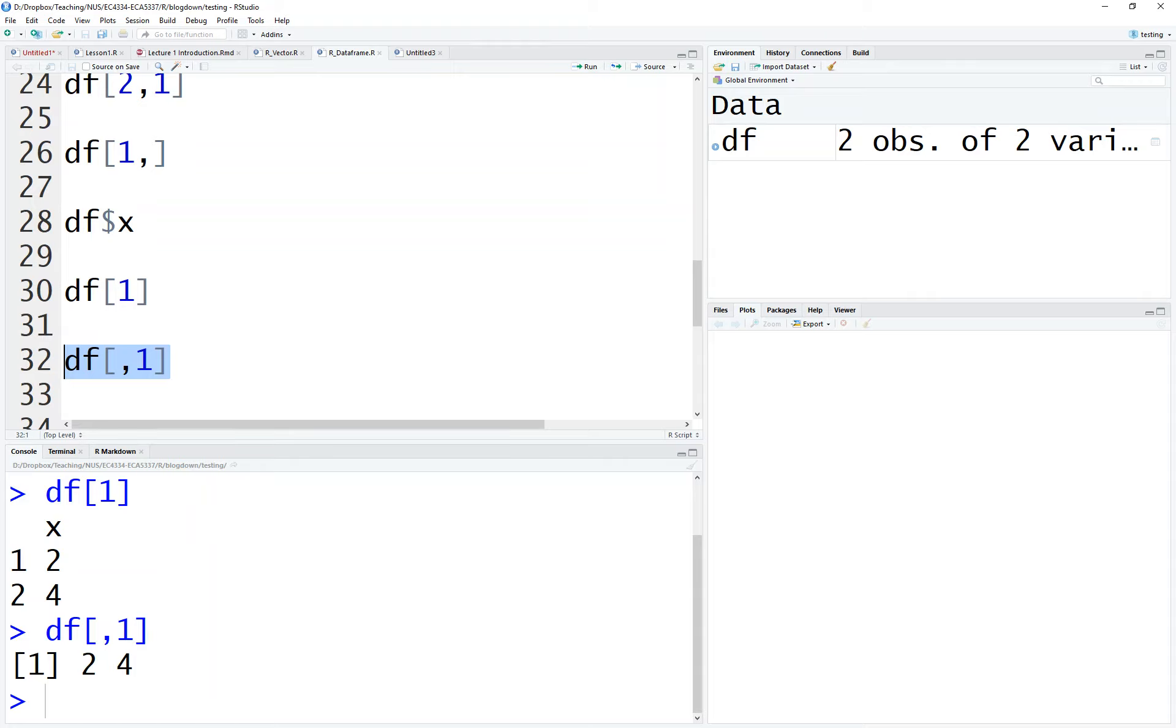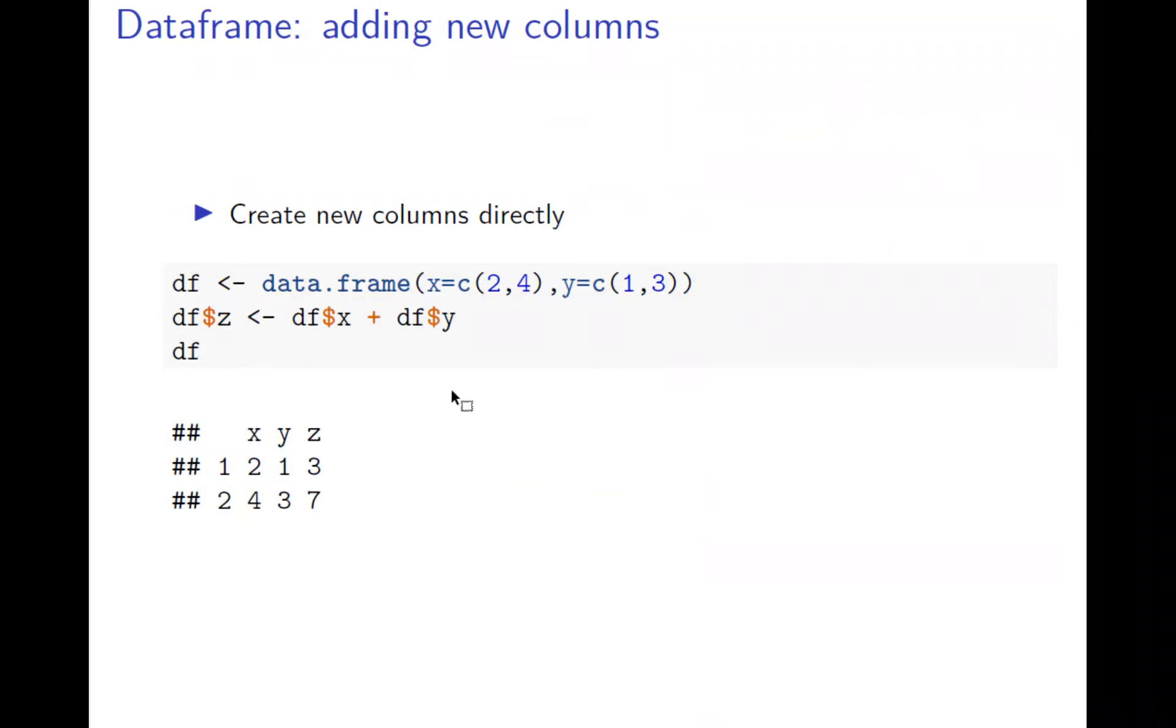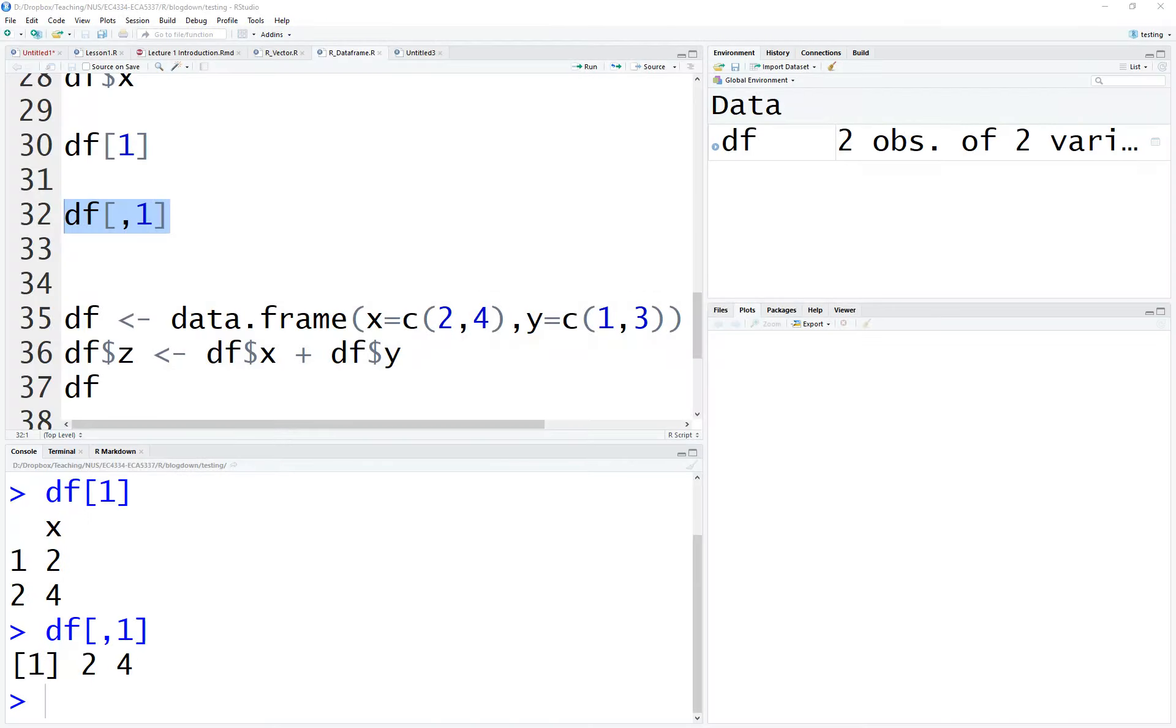Let's try. df$x will give the same answer. You run it, it gives you two four. df[1] also gives you two four. And df[,1] also gives you two four. So this is how columns can be called. You can also add new columns. You can directly create, let's call it dollar z, and it will be x plus y.